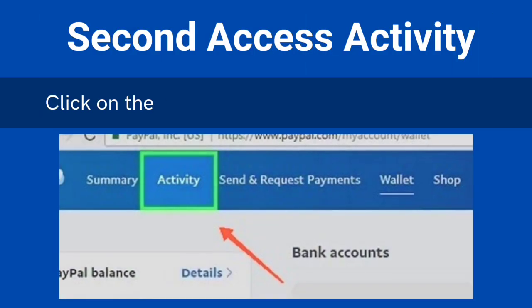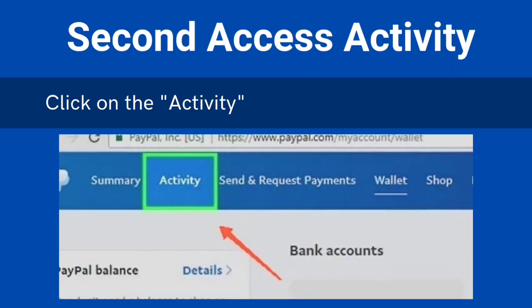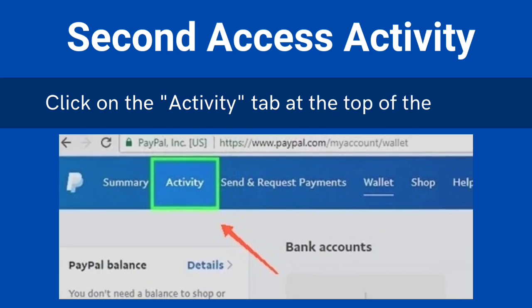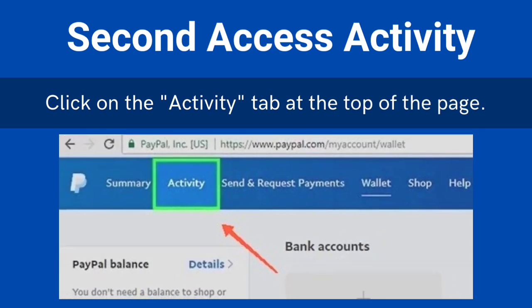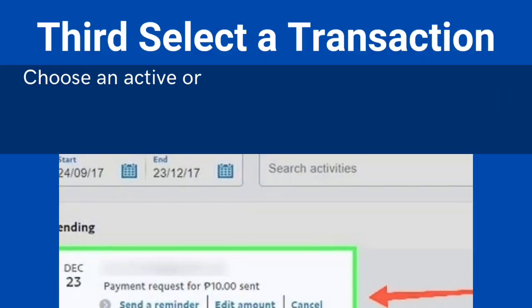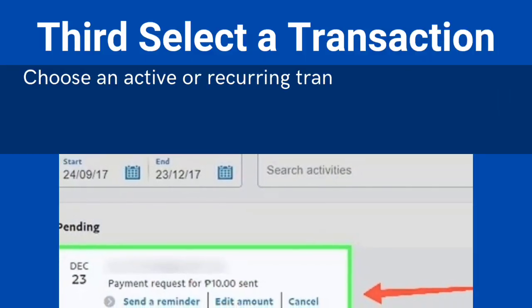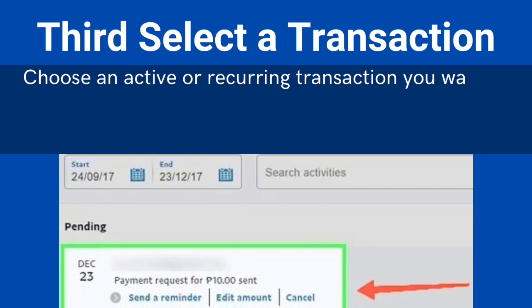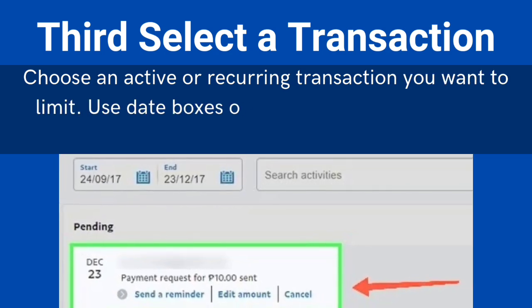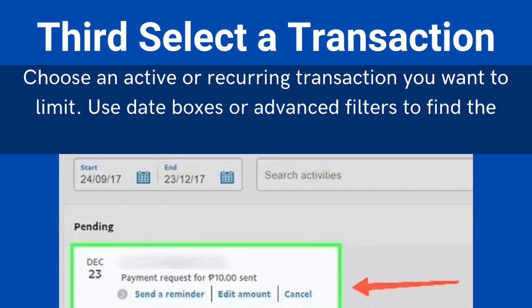Second, access activity. Click on the Activity tab at the top of the page. Third, select a transaction. Choose an active or recurring transaction you want to limit. Use date boxes or advanced filters to find the transaction.